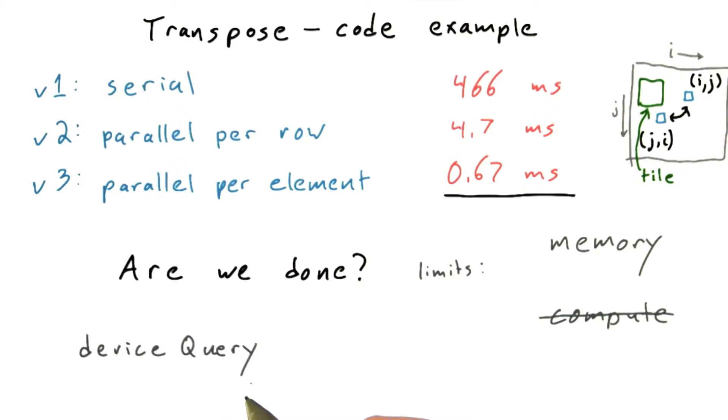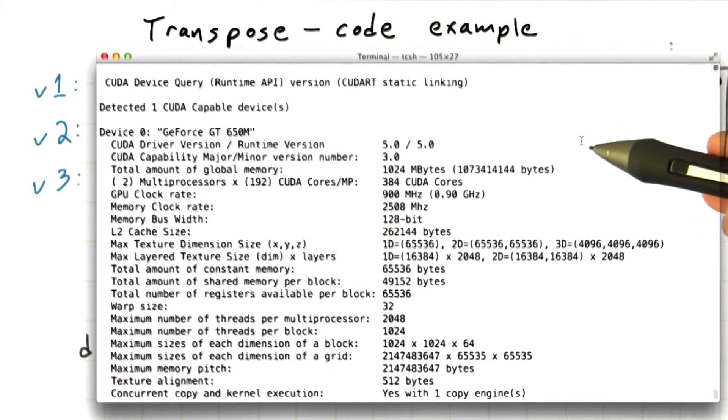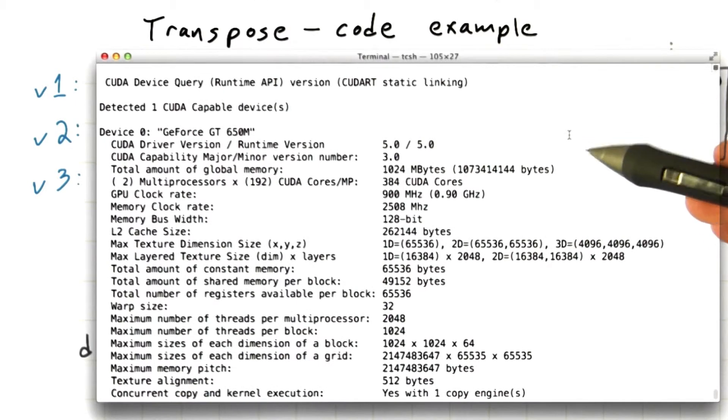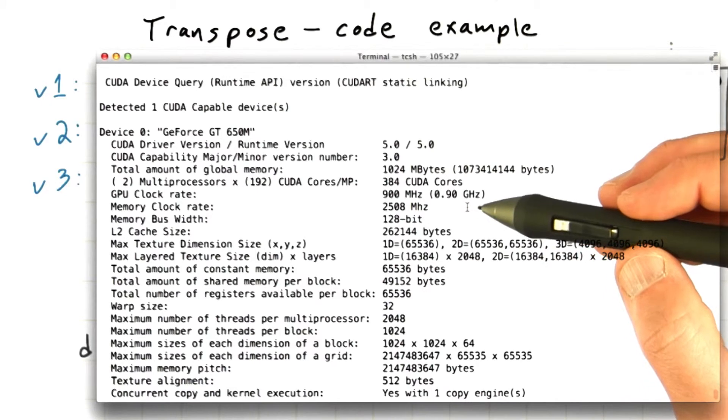There's a handy utility called device query that's included in the CUDA SDK. Let's run it. Device query spits out an enormous amount of information, most of which you don't really need to know right now. But buried in here are a few things that I want to point out.